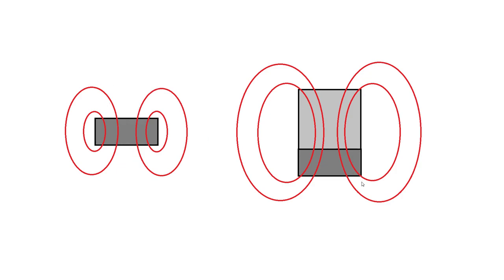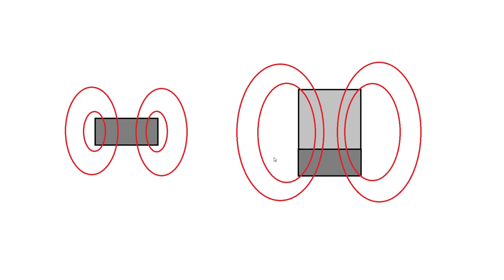Now if you've got a bit of steel, what happens is it gets channeled through the steel and it kind of comes around. And although this is a bigger field, it's not stronger. It is actually a bit weaker, but you can channel the magnetic field through materials.